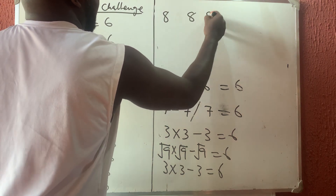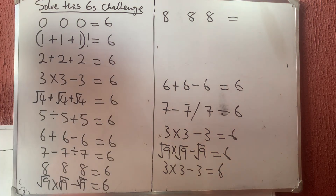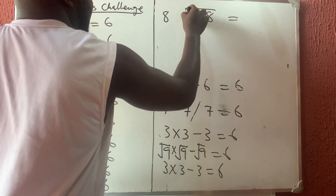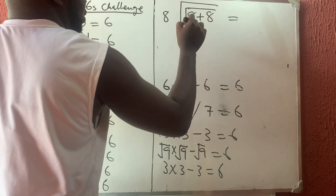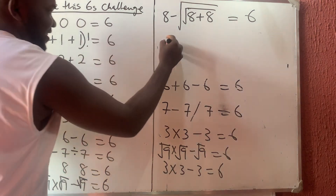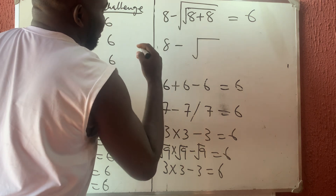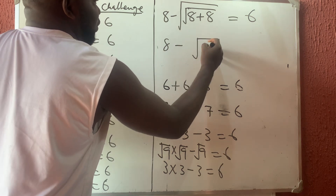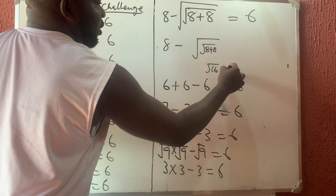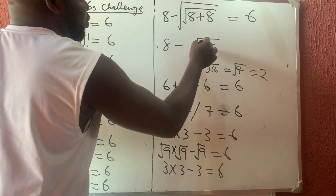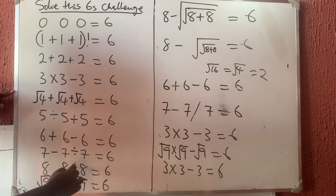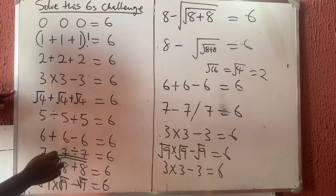What about eight, eight, eight? Eight plus eight is sixteen, and the square root of sixteen is four. If I take the square root of four I get two, and eight minus two is six. So for eight: eight minus the square root of the square root of eight plus eight equals six — using nested square roots.